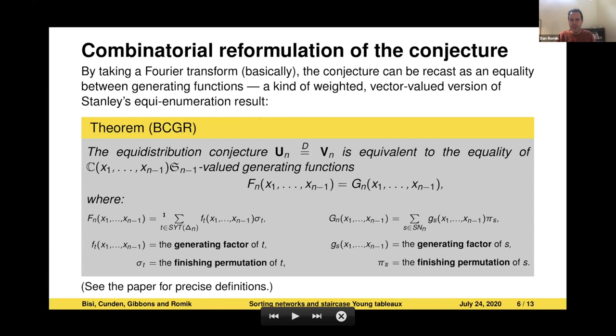Each component of those generating functions is a rational function in these indeterminate variables x_1 to x_{n-1}. How are these two generating functions defined? Each one is defined as a sum over the respective set of combinatorial elements that the random walk lives on. So f_n is a sum over standard Young tableau of staircase shape and g_n is a sum over sorting networks. That's why I say this identity is basically a weighted vector-valued generalization of Stanley's original theorem about two sets being equinumerous. It's like a weighted version of that. What are we summing in each sum? On the left-hand side, we're summing an expression of the form f_t(x_1 through x_{n-1}), which would be an ordinary rational function, a scalar one, but it gets multiplied by the vector associated with some permutation, which I label sigma_t. So f_t is what I call the generating factor of t, sigma_t is what I call the finishing permutation of t. I'll show a quick example in the next slide. On the right-hand side, we have something analogous where each sorting network, you can use it to calculate some data, which is the generating factor g_s and the finishing permutation pi_s. Then the claim is that when you do these complicated sums, then you get things that are equal on both sides. That's equivalent to our conjecture.